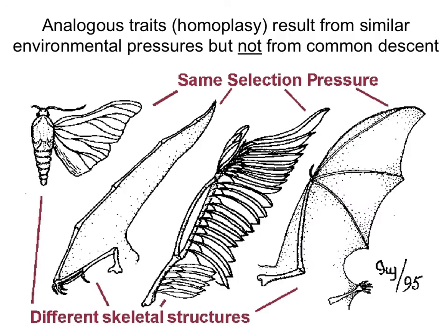Homoplastic traits are analogous traits, meaning they do not come from a common ancestor. They were not inherited from a recent ancestor; instead they evolved independently in each group. That is the case for the wings of insects, the wings of pterosaurs or ancient dinosaurs, the wings of birds, and the wings of bats. All of these wings evolved independently in each of these groups and they do not share a recent common ancestor who had those wings.